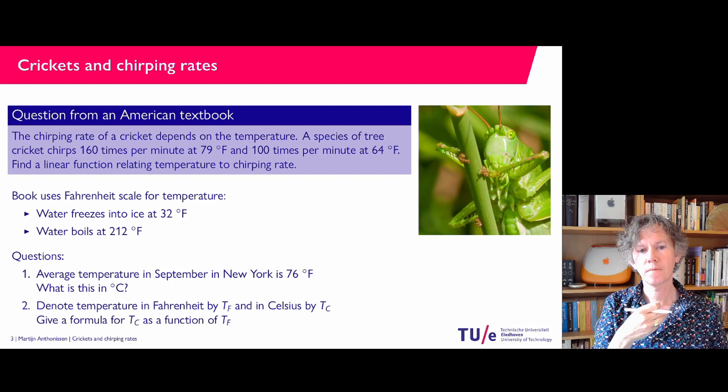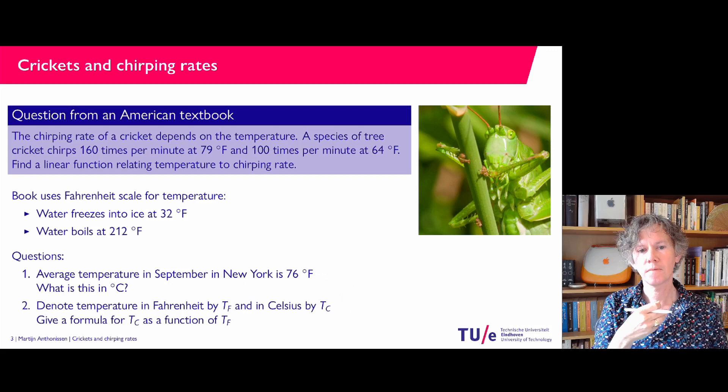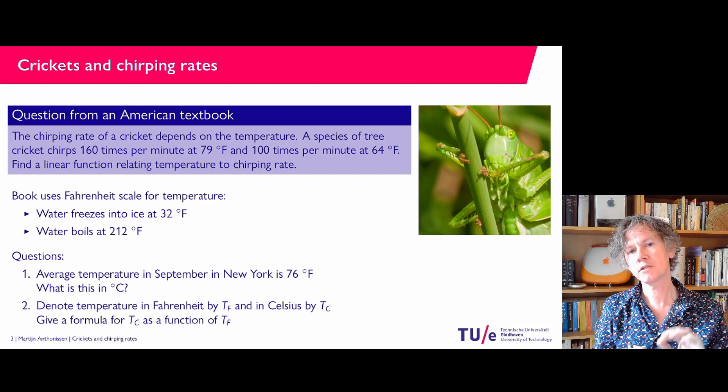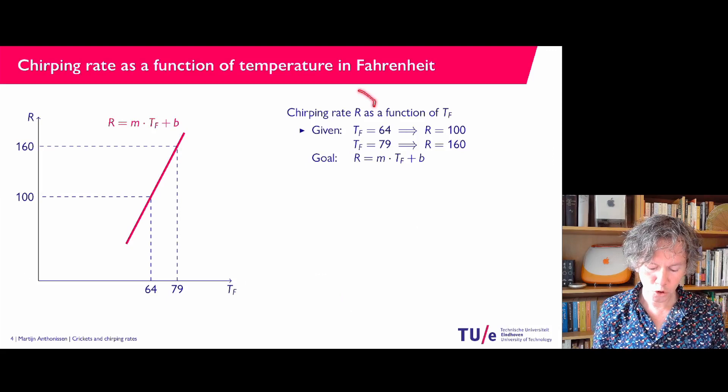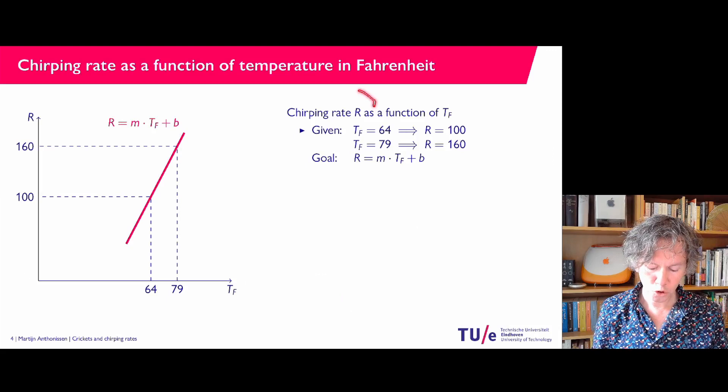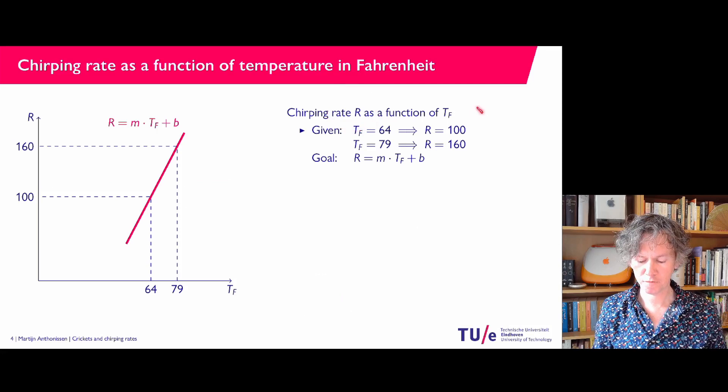So let's see. I am going to solve the original problem in two separate ways. First, I'm going to consider the temperature in Fahrenheit and find the relation being asked. We would like to find the chirping rate, which I denote with capital R, as a function of Tf, the temperature in Fahrenheit. And we have two data points from the question: for Tf equals 64, the chirping rate is 100.